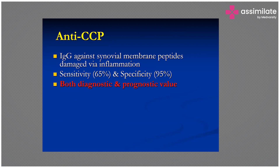For anti-CCP antibodies: IgG is directed against cyclic citrullinated peptide — damage to synovial membrane via inflammation. Sensitivity is 65% and specificity is 95%, so it is highly recommended. It is both diagnostic and has prognostic value. When writing for an RA workup, always suggest anti-CCP alongside RF.